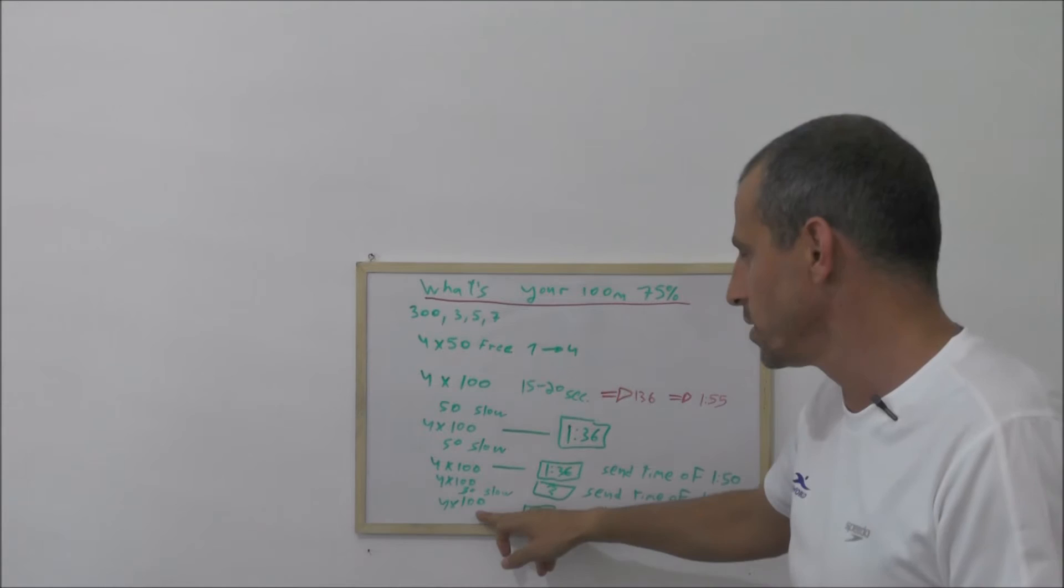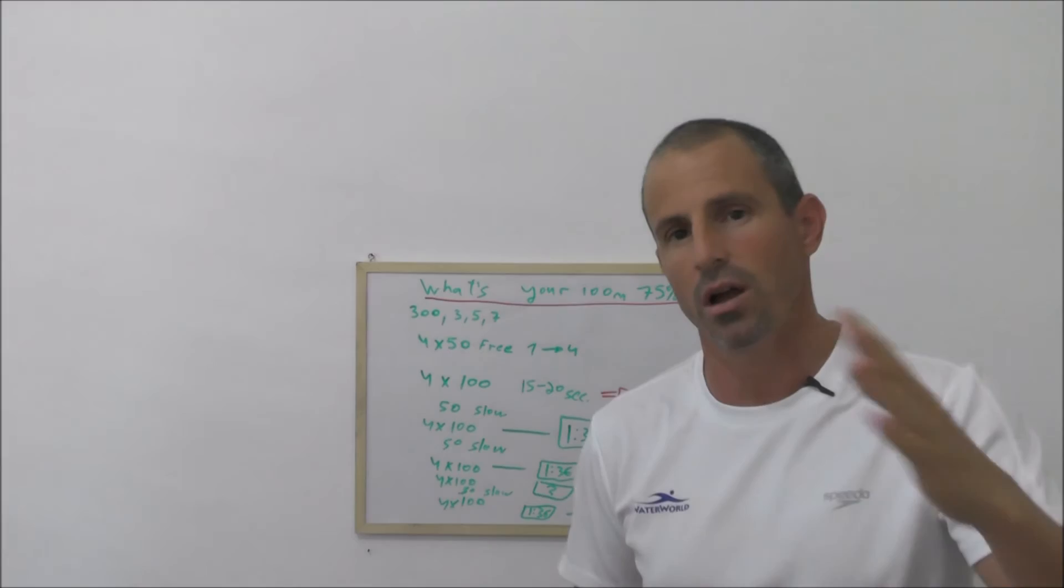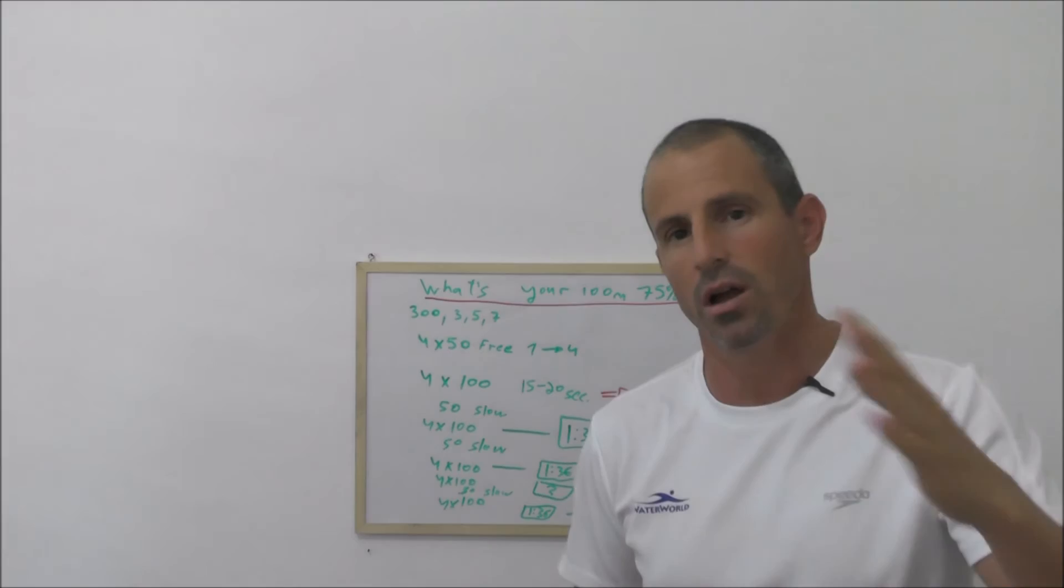Another 50 slow and we're gonna do the last four times 100. This time we're gonna do exactly like the first exercise. In this exercise, even if you're a little bit tired, you're going to succeed to swim in the exact same pace.